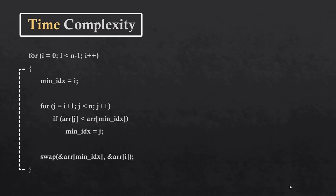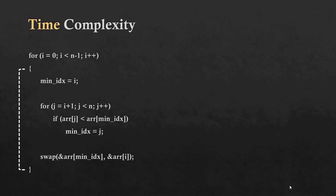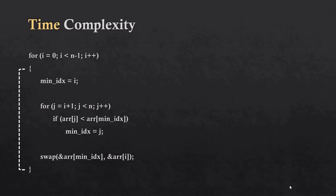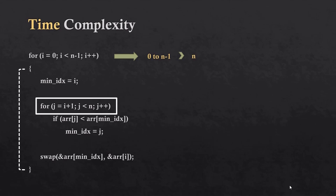Now let's calculate the time complexity of selection sort. The outer loop runs from i equal to 0 to i less than n minus 1, meaning it runs n iterations. The inner loop runs from i plus 1 to the last index, which also amounts to n iterations.